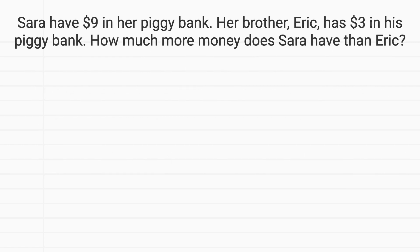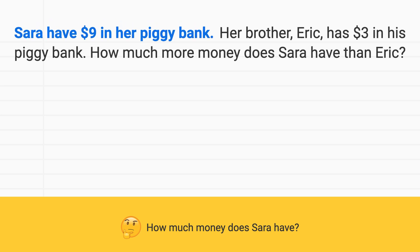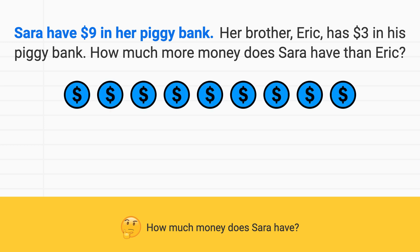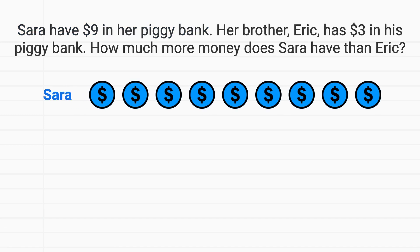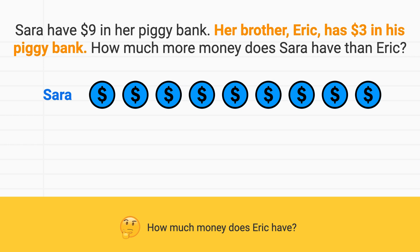Well if we think about this problem, how much money does it say Sarah has? It tells us that Sarah has $9 in her piggy bank. We could draw out those $9 — these are Sarah's. Then how much money does Eric have? The problem tells us her brother Eric has $3 in his piggy bank. Here are Eric's $3 and we'll label them as his.